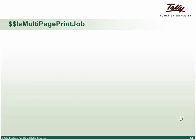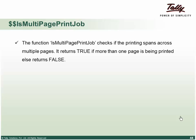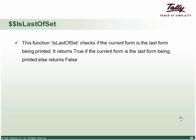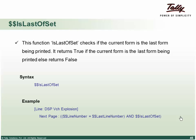Is multi-page print job checks if the printing spans across multiple pages — if yes, makes certain things active or inactive. For example, if it's the first page and you don't want to print something, make it invisible. Last offset checks if the current printing page is the last page being printed — if it is the last page it returns true, otherwise false. This can be used when at the last page you want to show an additional part saying 'thank you for shopping with us'.